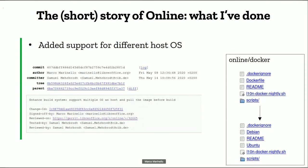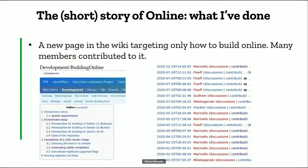So one of the things we did was provide different Dockerfiles so that the script can autonomously decide which one to use depending on your host system. A new page in the TDF wiki targeting only how to build Online was created, and many members contributed to it. You can now find a page named 'Building Online' which is entirely about how to build it and which flags to set.